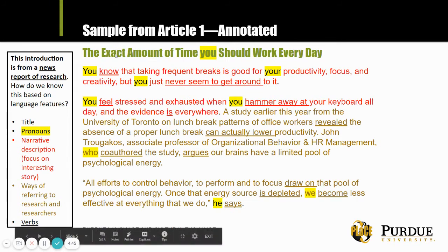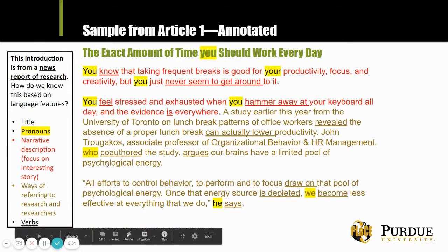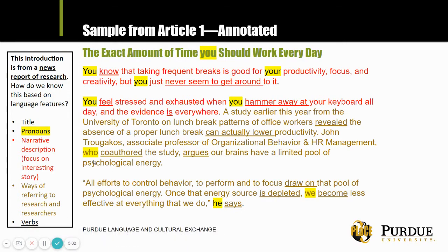We can start with the title: 'The Exact Amount of Time You Should Work Every Day.' We see the pronoun 'you' appear in the title and throughout the paper, especially in the beginning. This is not a common pronoun in academic writing — it's addressed to a general reader. The other pronouns are all referring to people.